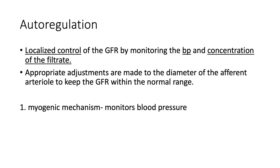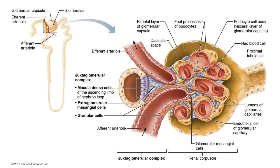Autoregulation has to do with a specific area in the nephron called the juxtaglomerular apparatus. The name tells you what it's about — 'juxtaglomerular' means right next to the glomerulus. The juxtaglomerular complex, or juxtaglomerular apparatus, involves sensitive cells that are close to the glomerulus.